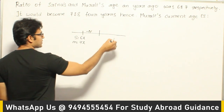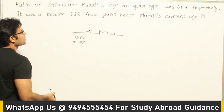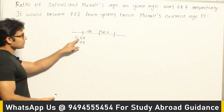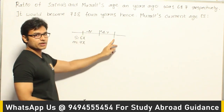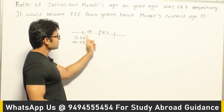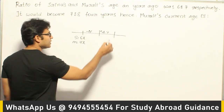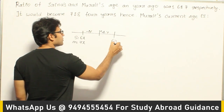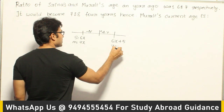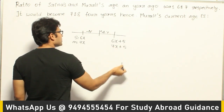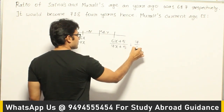Now, 4 years hence means plus 4 from the present. The total time difference from 1 year back to 4 years hence is 5 years. So by the time we reach 4 years hence, their ages will become 6X plus 5 and 7X plus 5. It is given that the age ratio at that point is 7:8.